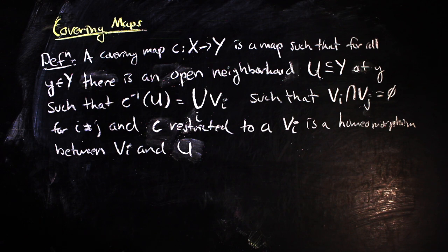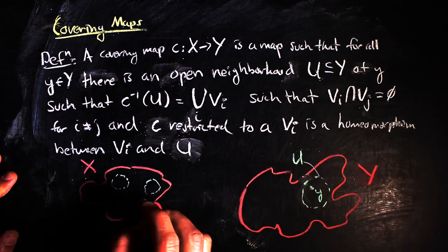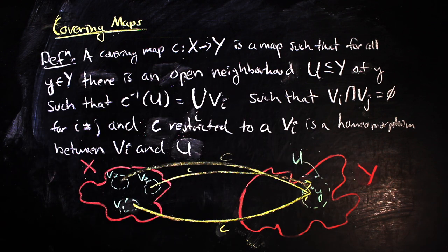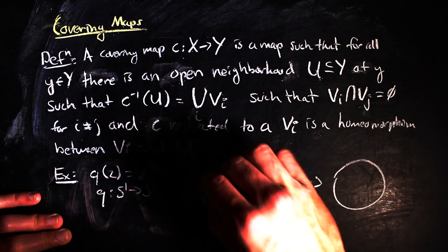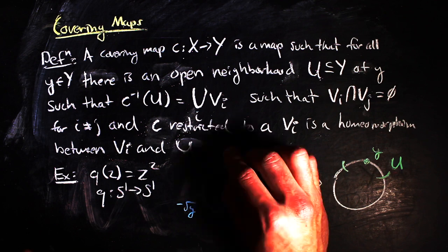We should probably visualize that a bit, because that was a lot. Essentially, for each neighborhood in the image space, there are neighborhoods in the domain space that are disjoint and are topologically identical to it. And for example, one can show that the squaring map from the circle to itself is actually a covering map.